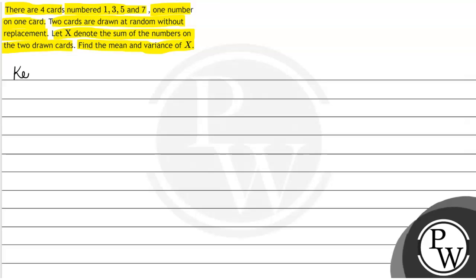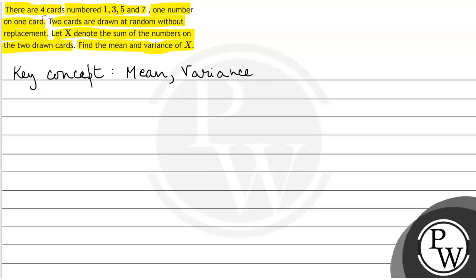In this question, what is the concept of mean and variance? We will get the expectation from each value — this is the expected value. So here we have 4 cards given, with numbers 1, 3, 5 and 7. One number is in one card.